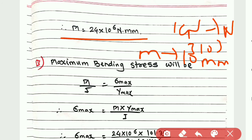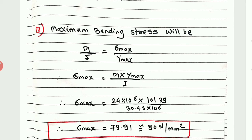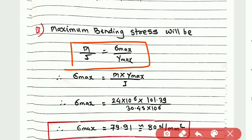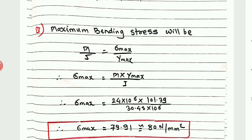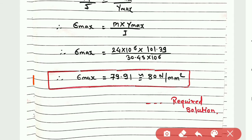Converting units: 24 kN·m × 10⁶ = 24 × 10⁶ N·mm (since kN to N is ×10³ and m to mm is ×10³, giving ×10⁶). Using the flexural formula M/I = σmax/ymax, we get σmax = M × ymax / I. Substituting all values, the maximum bending stress = 79.91 ≈ 80 N/mm².